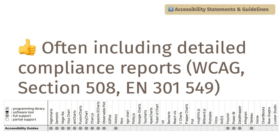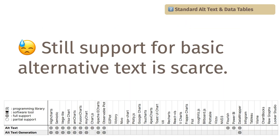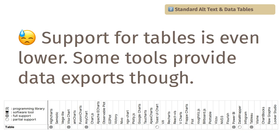Since many of these tools are used by government agencies, they are required to ensure that their tools are accessible. A few tools provide documentation and guidelines for creating accessible visualizations. However, we found that a majority of tools do not even support alternative text, as evidenced by the many empty cells in the table. Alternative text was often automatically generated using available data, and some tools allow for customization of the generated text. Support for tables is even lower, but some tools offer data exports.